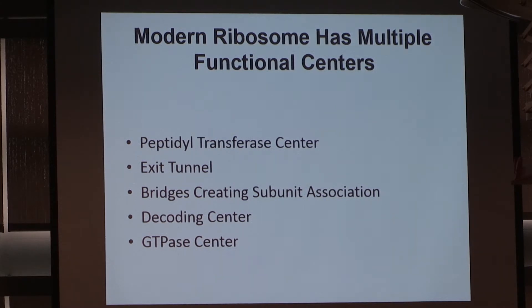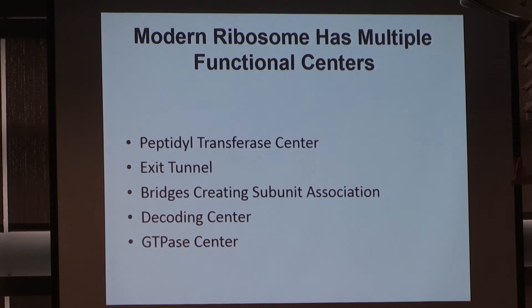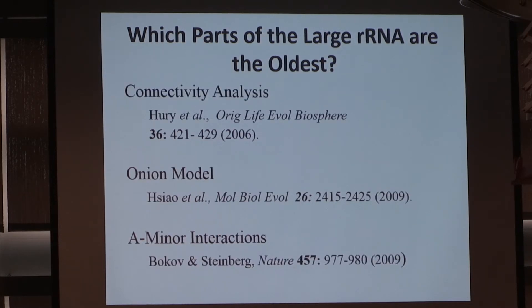We have the PTC, which in our view has got to be the beginning — the oldest part of the ribosome. But then you also have the exit tunnel, which is basically of equal age with the PTC. You have bridges that compare across the two subunits — a 50S subunit and a 30S subunit in bacteria and archaea — held together by bridging elements. Then there's the decoding center in the 30S subunit where you decode the message, and the GTPase center, which facilitates the motion. So the question becomes: which parts of the large ribosomal RNAs are actually the oldest?